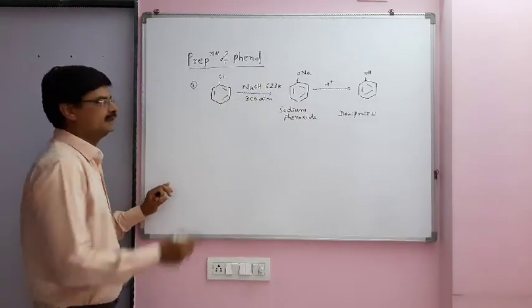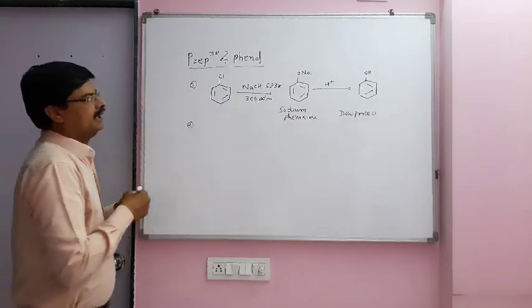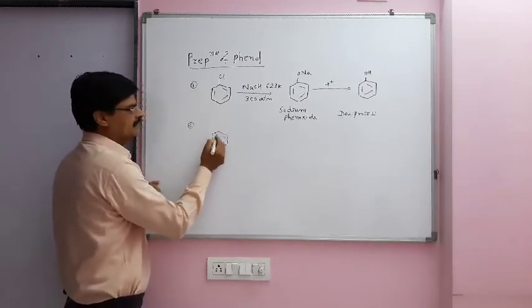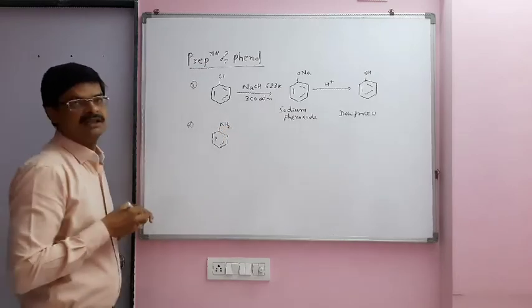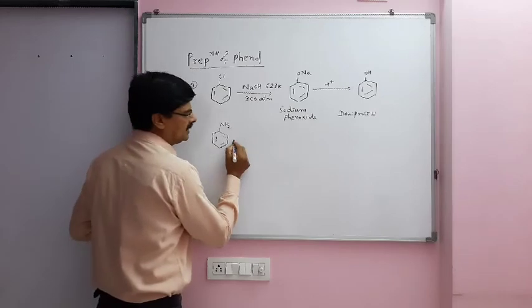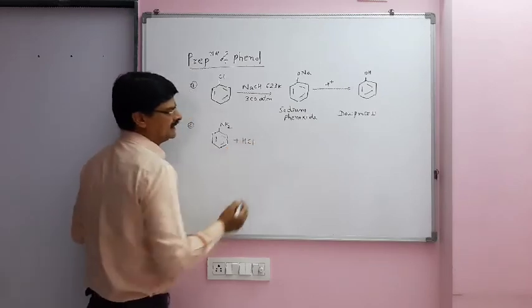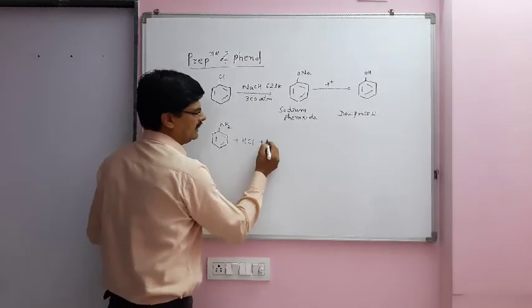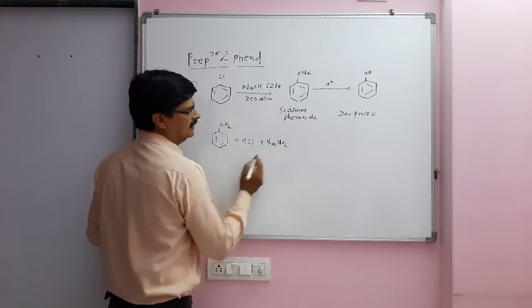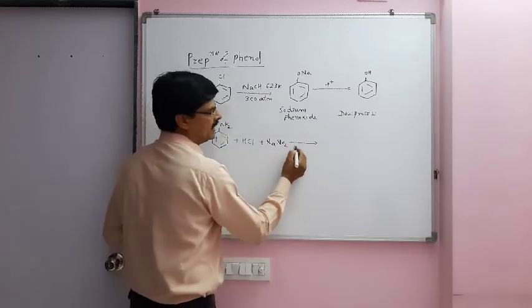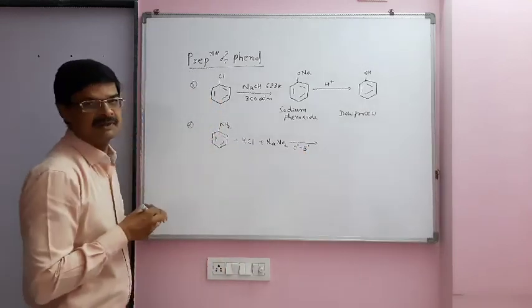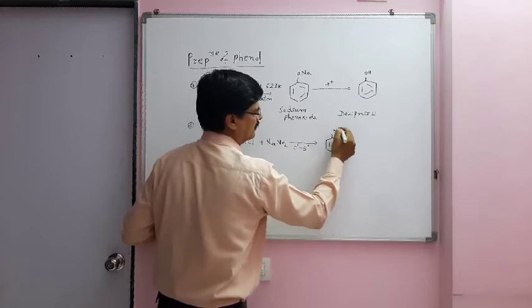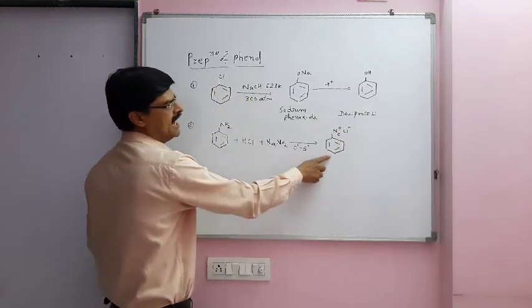Now, the second method. If we have aniline, which is benzenamine containing NH2, first it is dissolved in hydrochloric acid and reacted with NaNO2. Benzene diazonium chloride is formed at 0 to 5 degrees Celsius temperature.